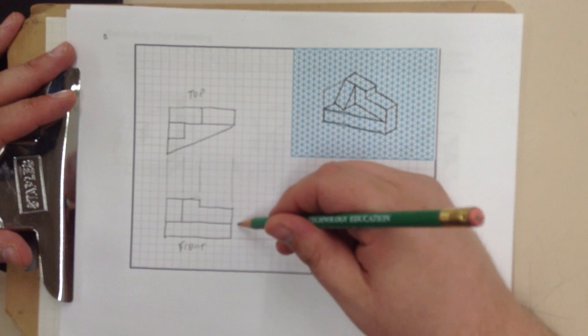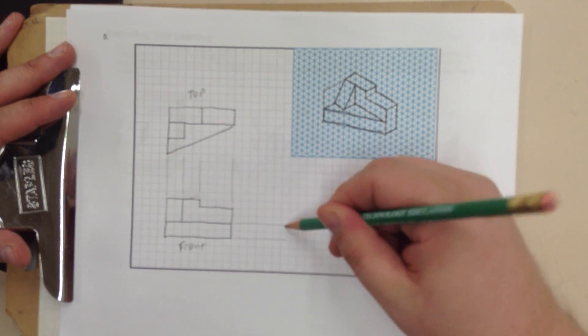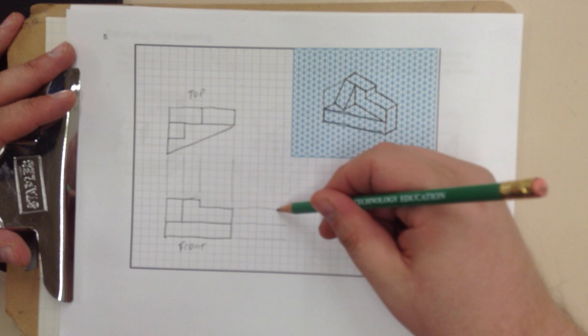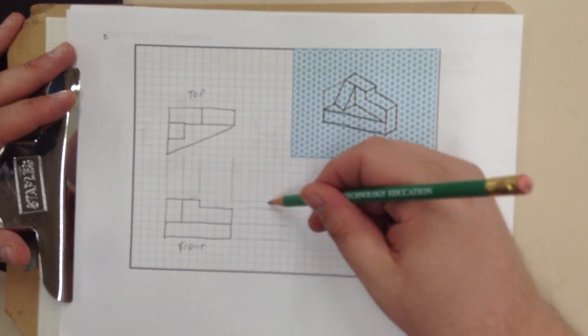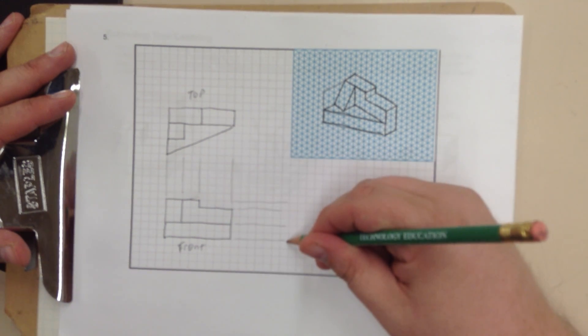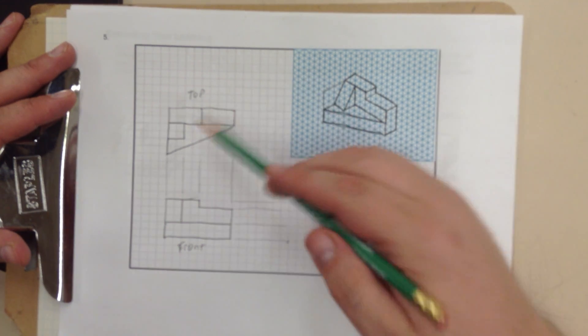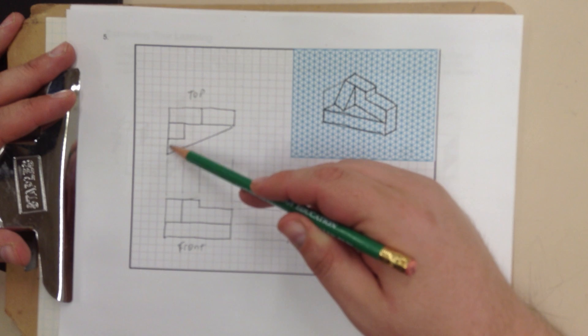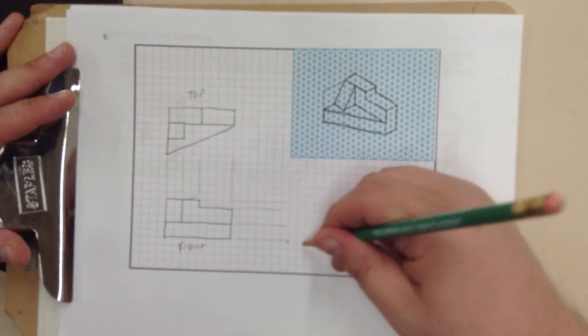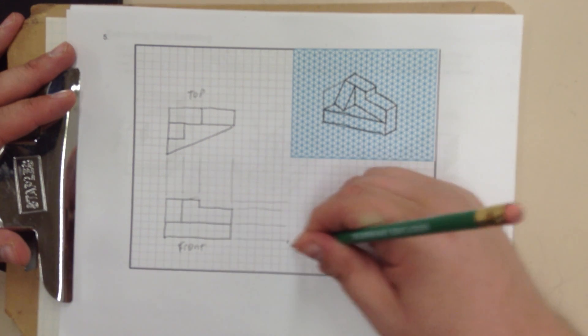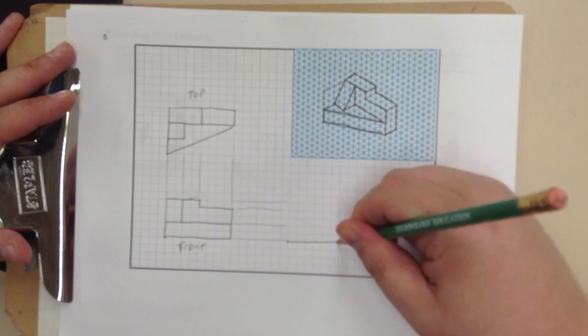I have my construction lines. I'm going to bring everything across. Start with my origin point, which will again be that. It is a total of 1, 2, 3, 4, 5, 6 wide. 2, 3, 4, 5, 6 wide. Just like so.